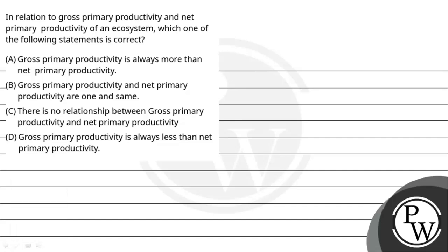Let's read the question. The question tells: in relation to gross primary productivity and net primary productivity of an ecosystem, which one of the following statements is correct? The options are: A — gross primary productivity is always more than net primary productivity; B — gross primary productivity and net primary productivity are always the same; C — there is no relationship between gross primary productivity and net primary productivity.